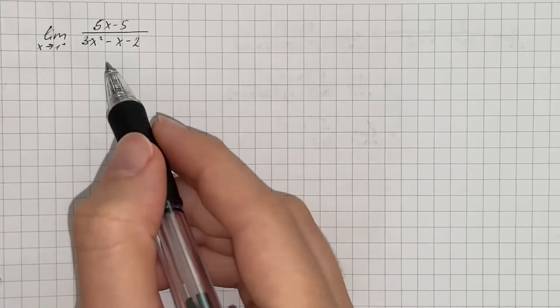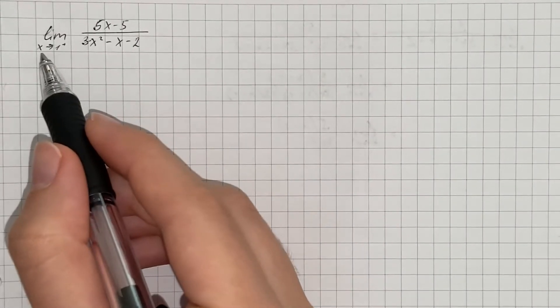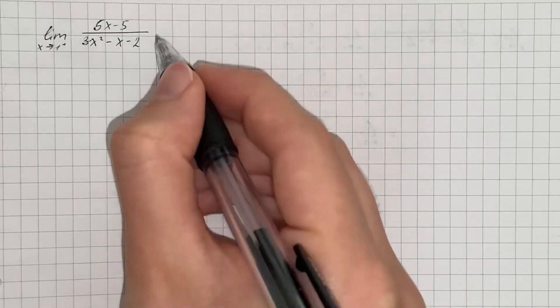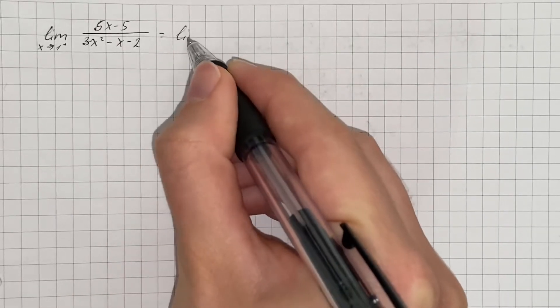We have to calculate the given limit. If we just substitute x equals 1, we'll get indeterminate form 0 over 0. So at first we're going to simplify our limit.